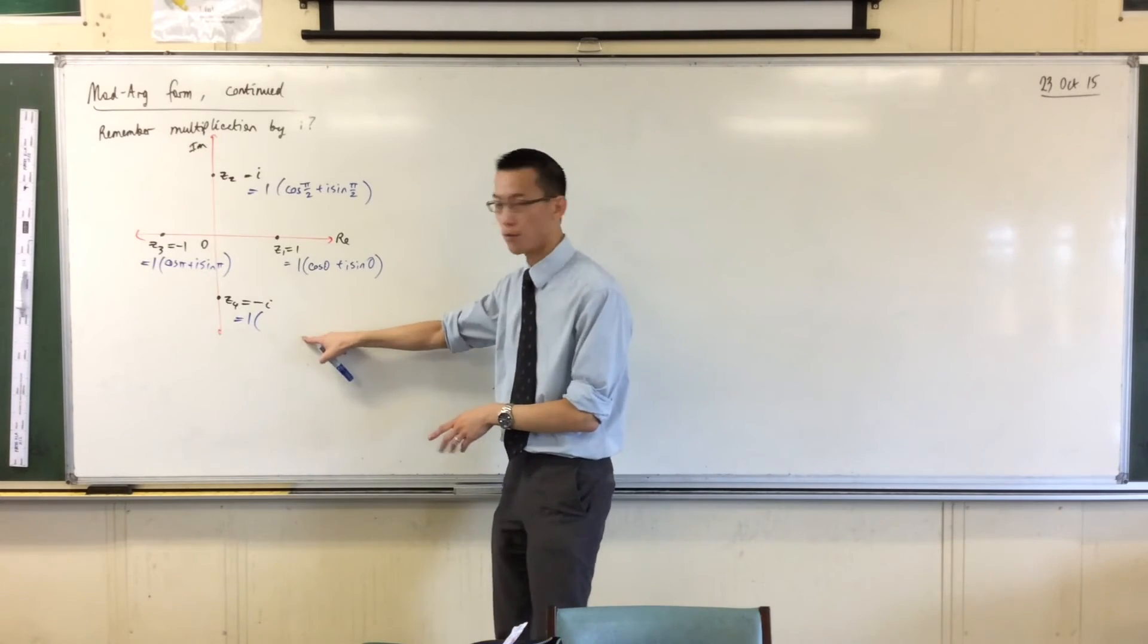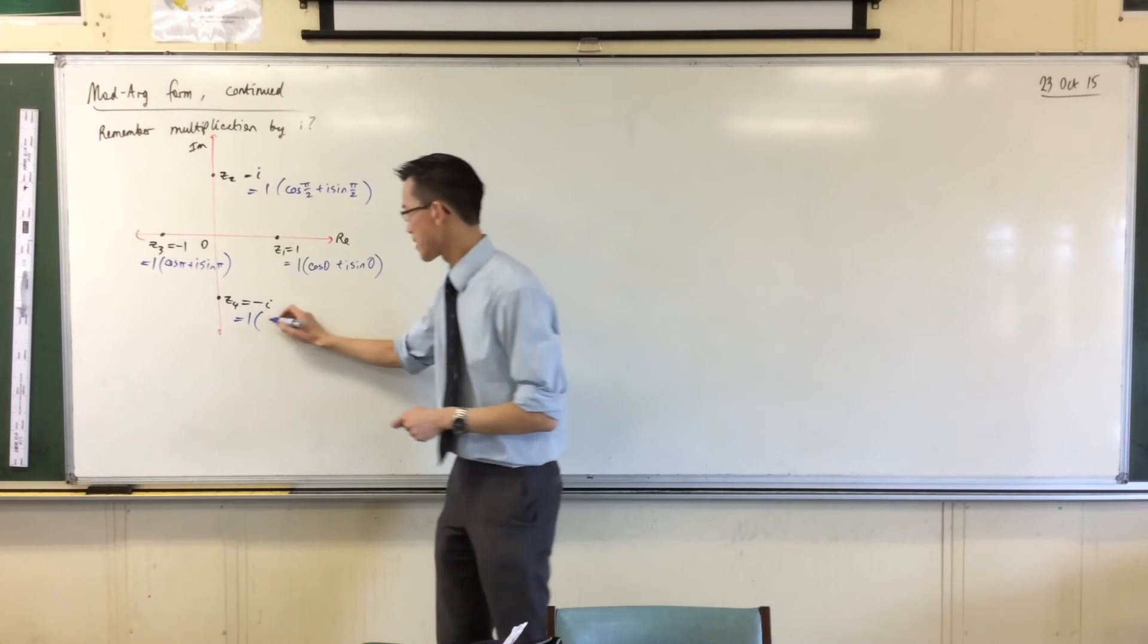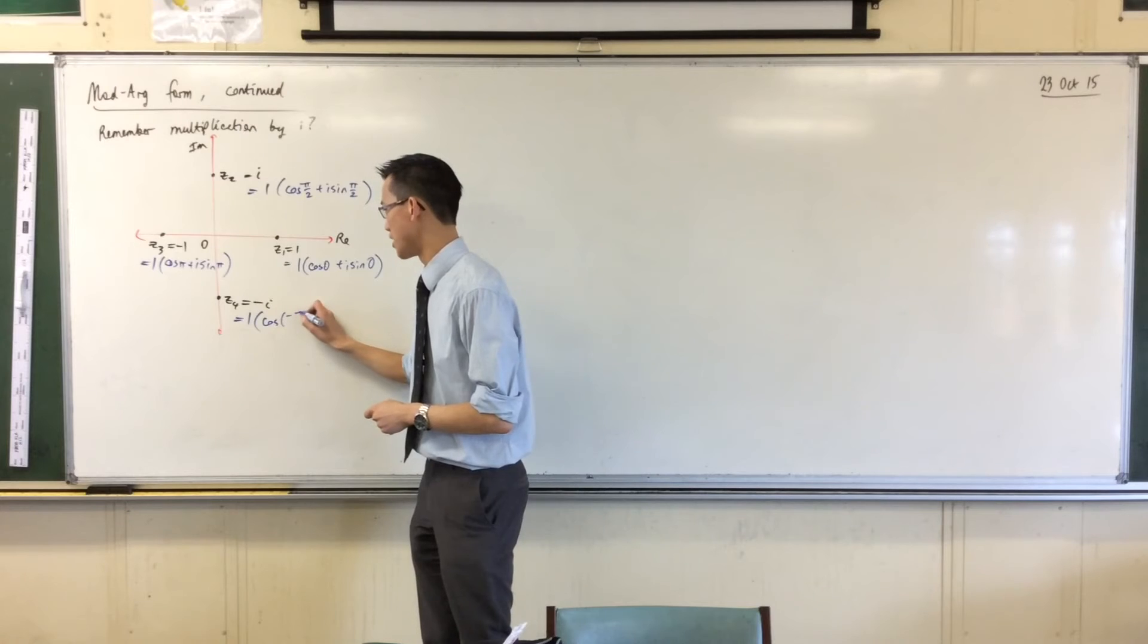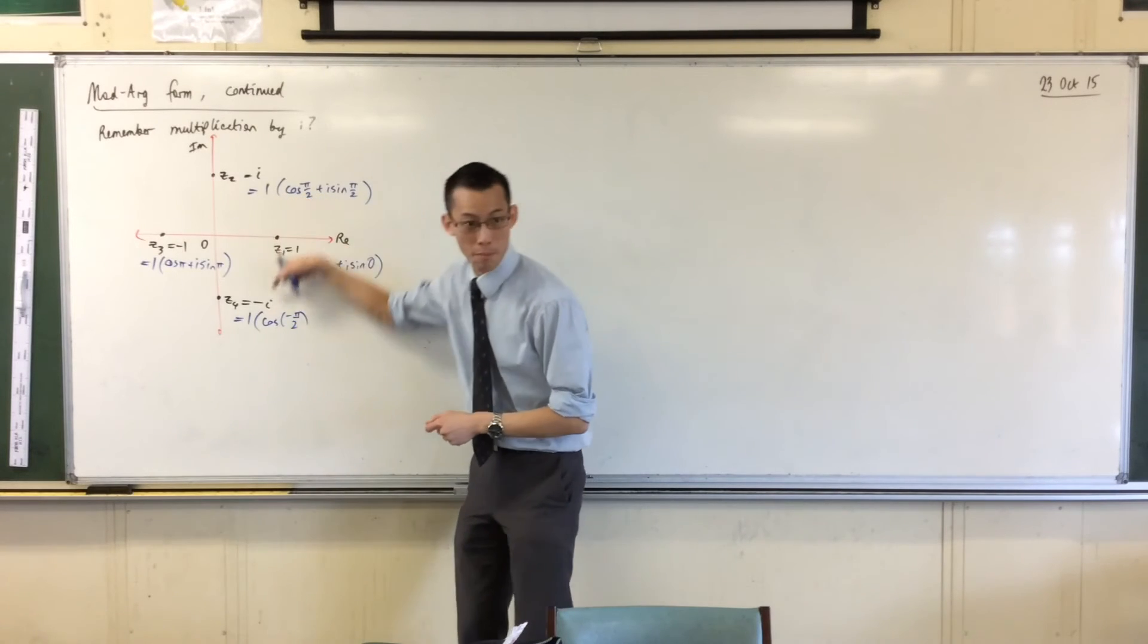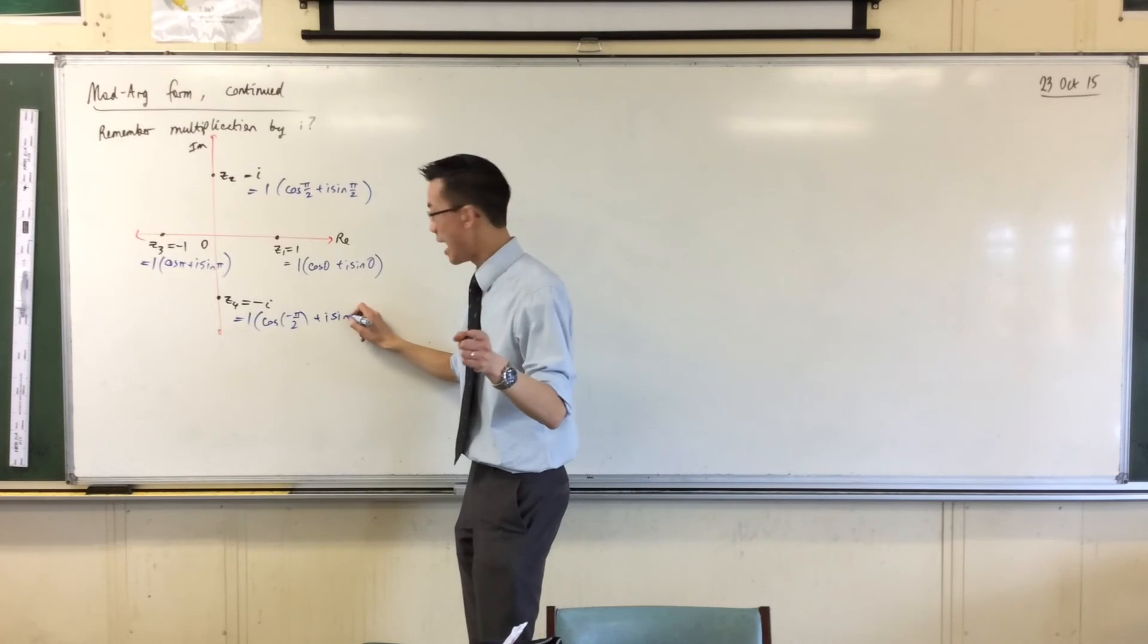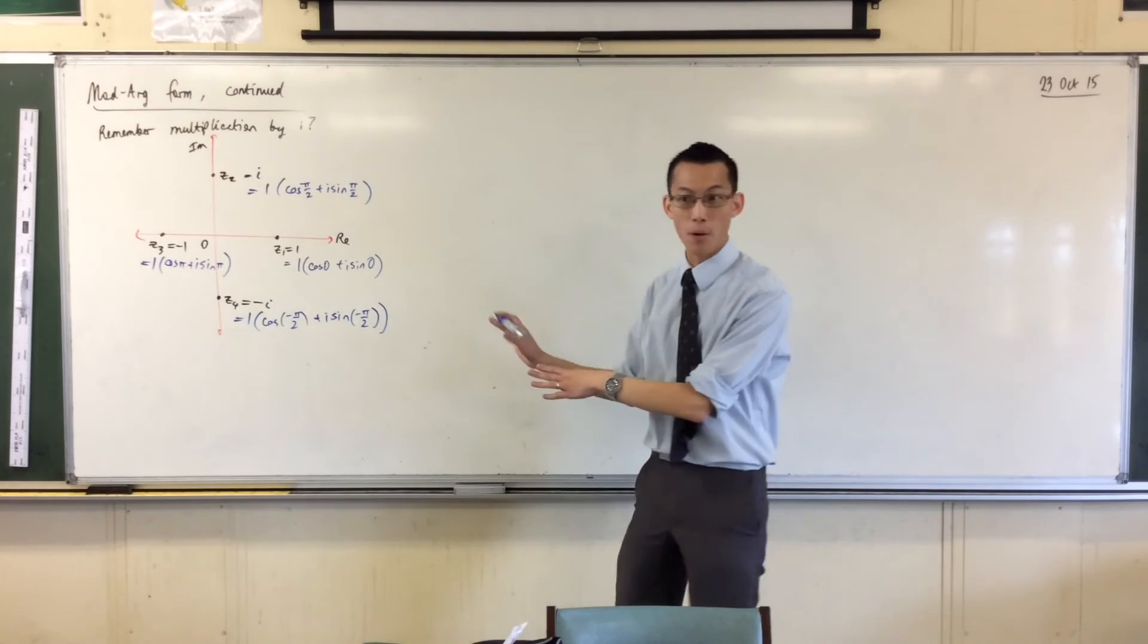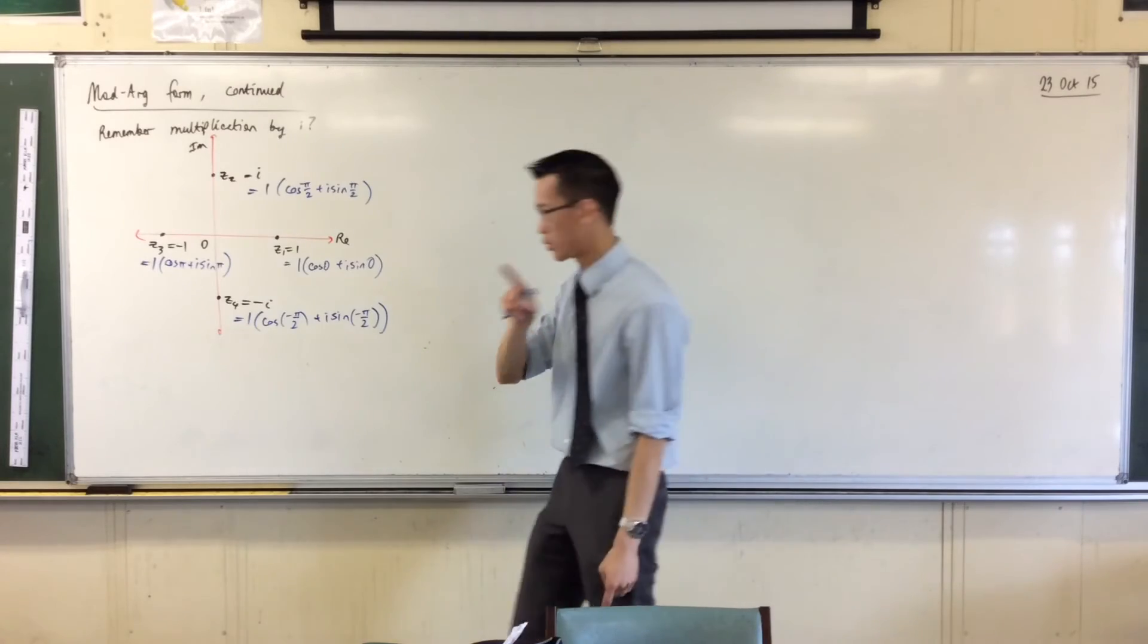Last one, be careful because I want to try and preserve the principal argument here. It's going to be cos minus pi on 2 because we're going to go measure this way, which is negative. So you can't, like, write 3 on 2 pi. Okay, now, I am going to write it, okay?